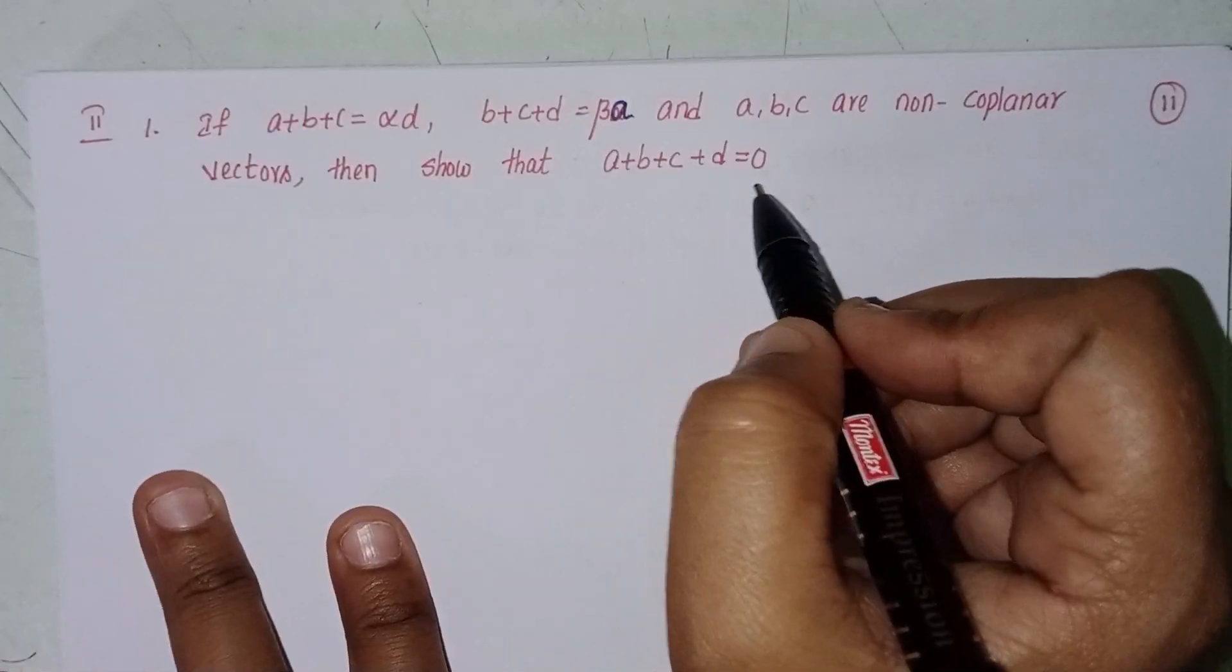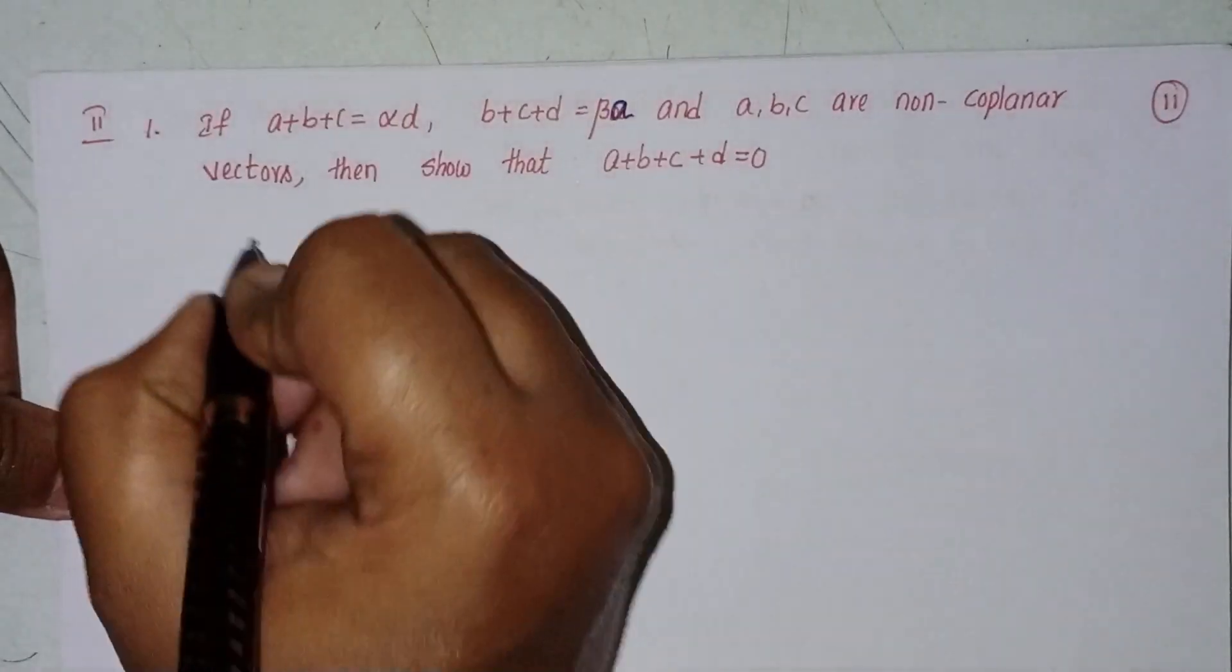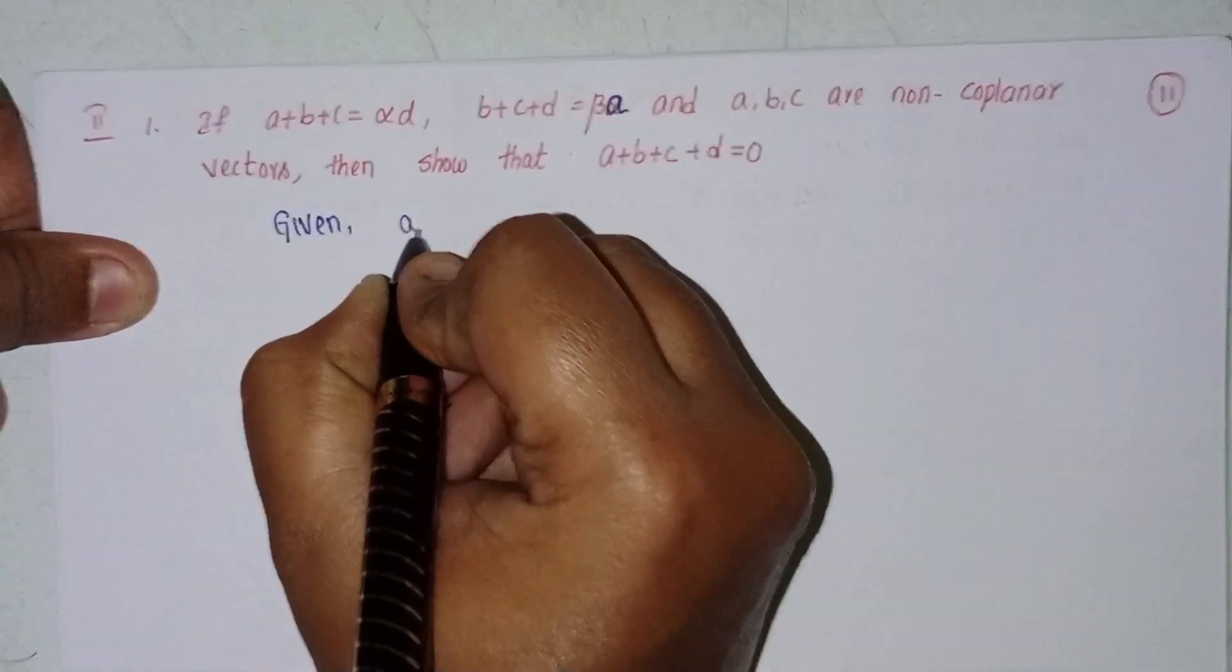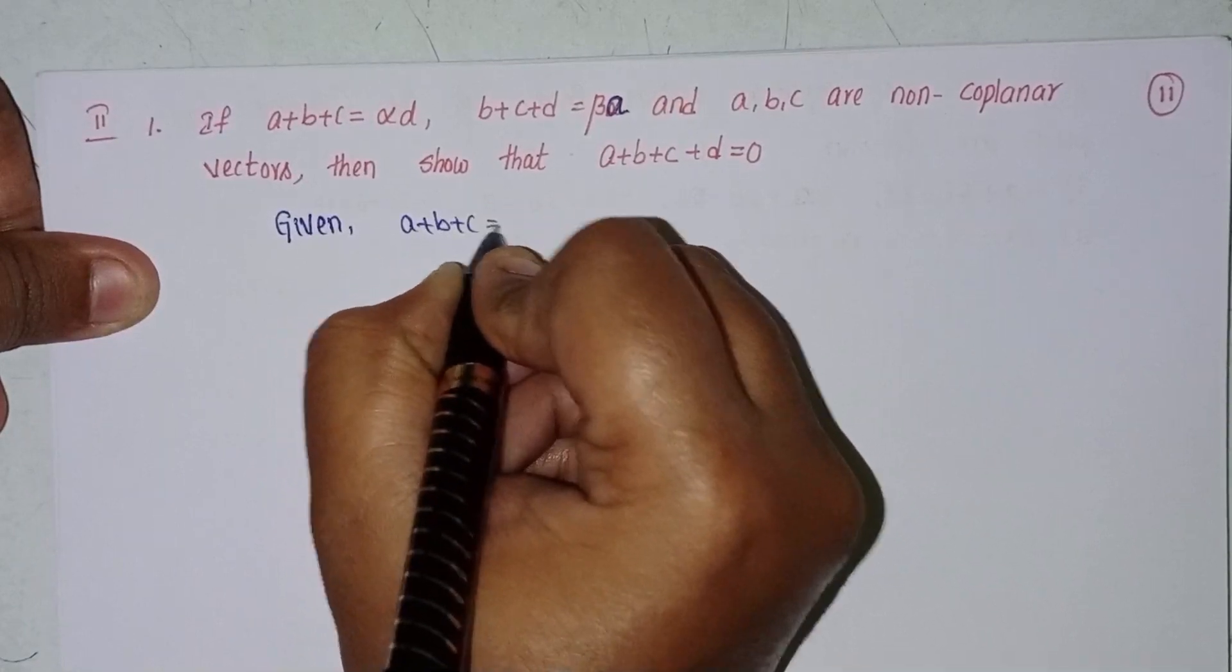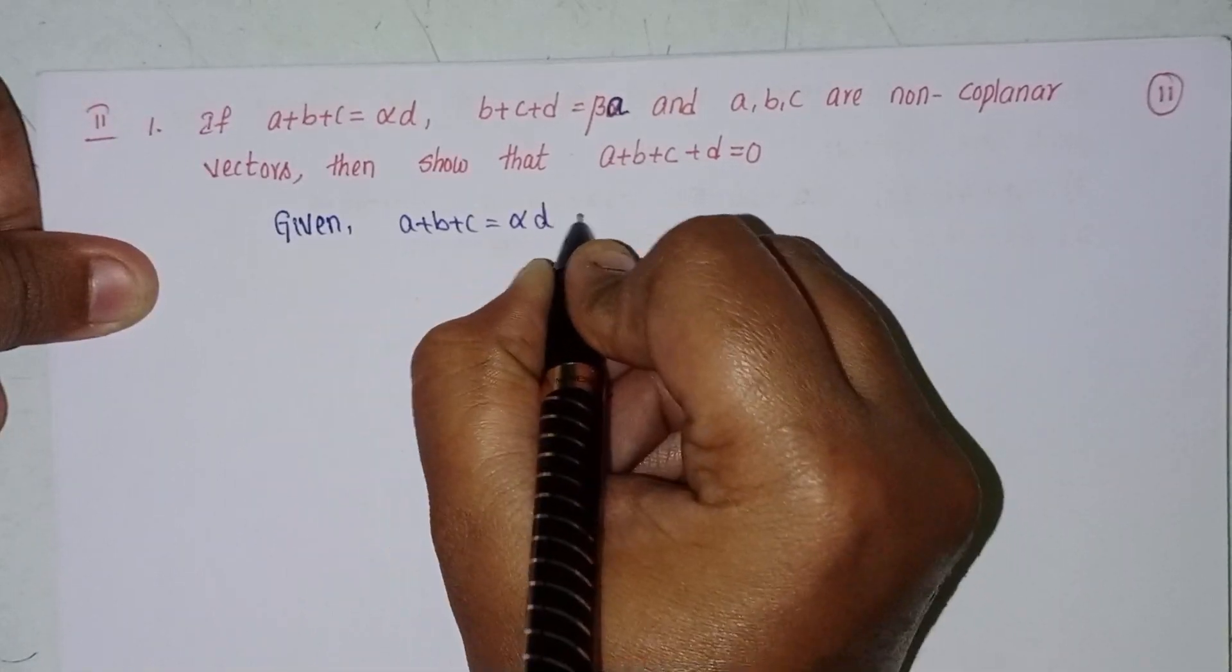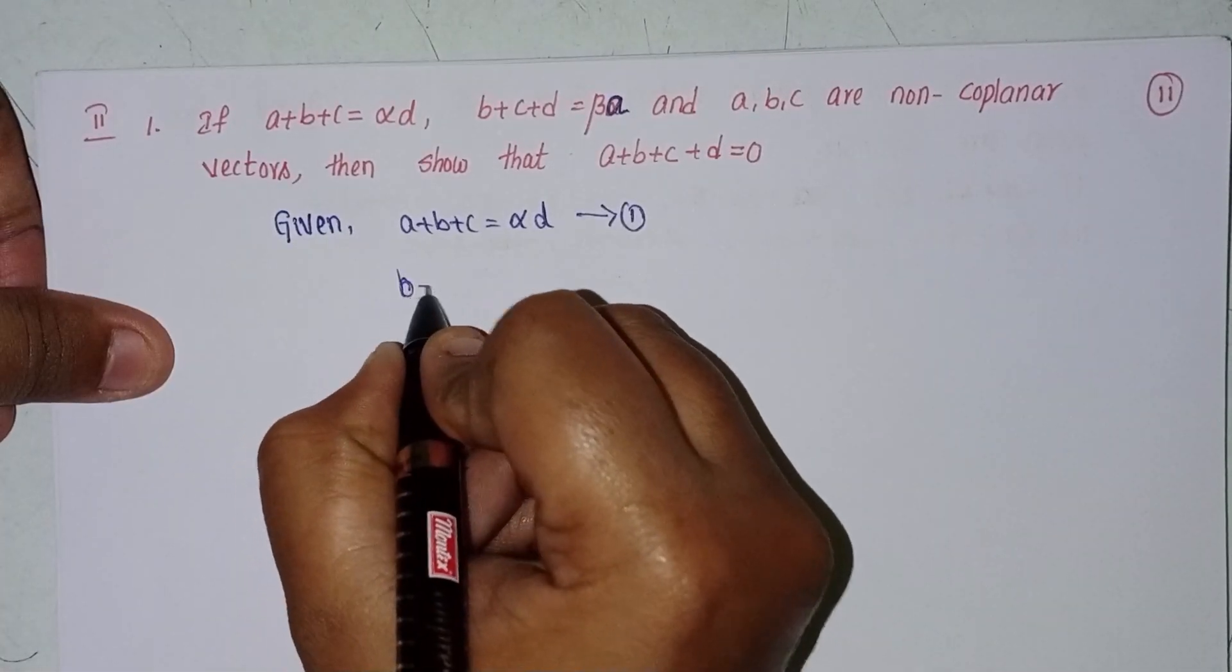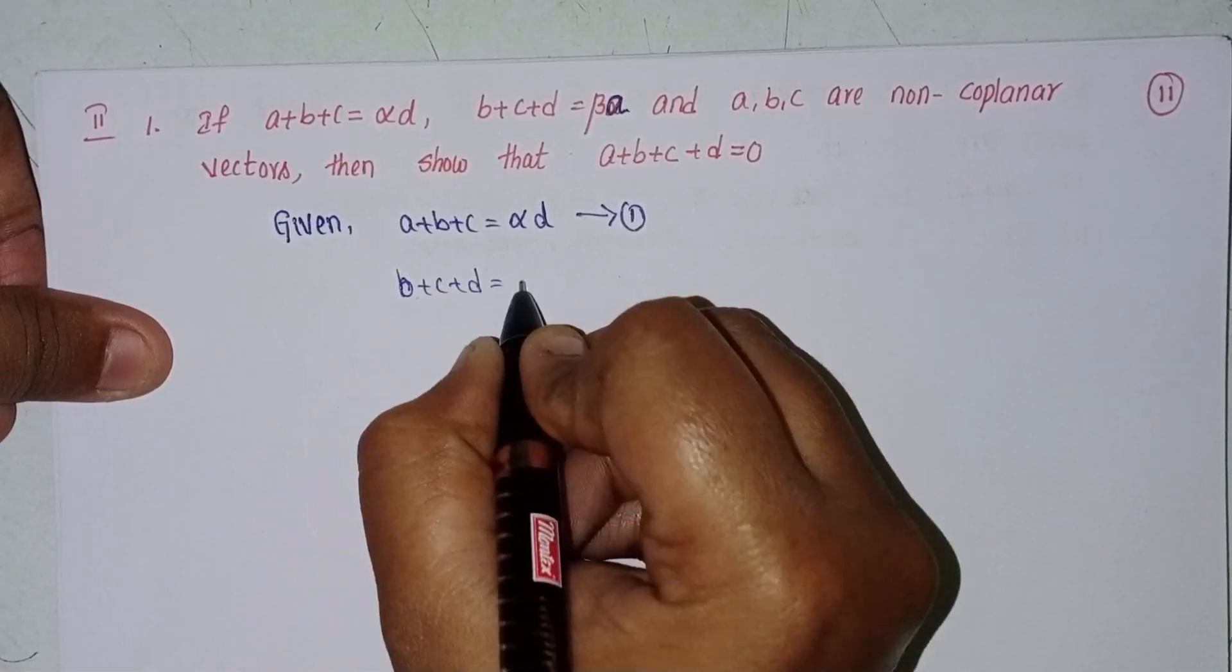Okay, first of all, given: a plus b plus c equal to alpha into d, equation 1. Next, b plus c plus d equal to beta into a, equation 2.